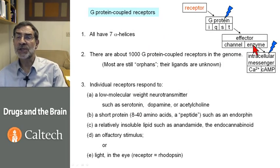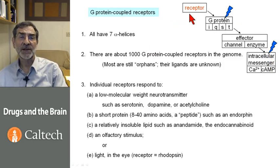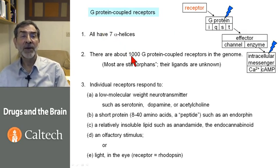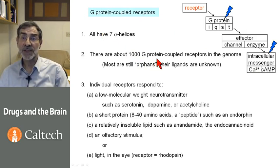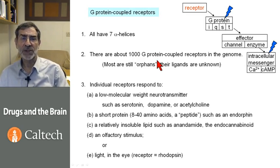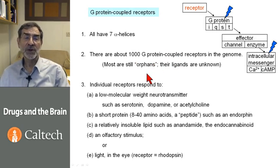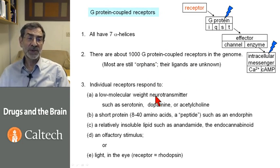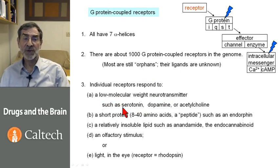What are some generalizations about the G-protein coupled receptor itself? All of them have seven alpha helices in the membrane. There are about 1,000 G-protein coupled receptors in the genome — that is, 4 to 5% of the 20,000 to 25,000 genes in the genome. Most are still orphans, meaning their ligands are unknown. Individual members respond to low molecular weight neurotransmitters such as serotonin, dopamine, or acetylcholine.